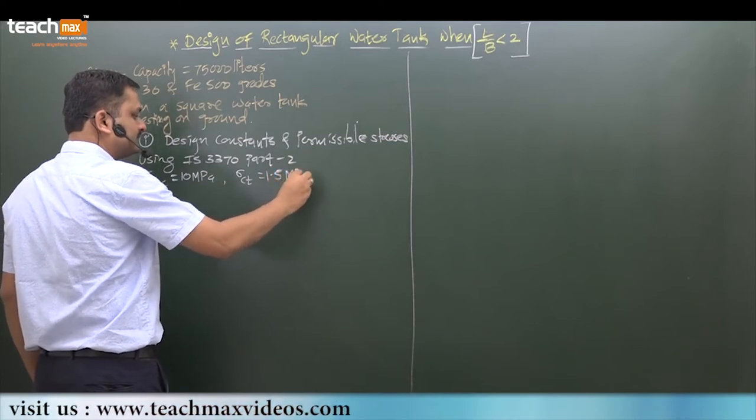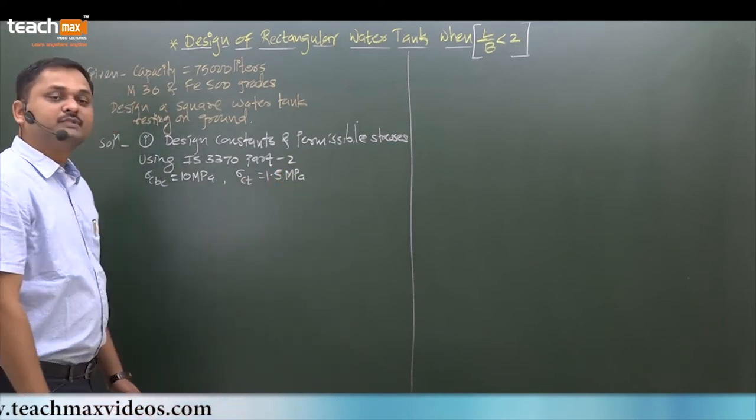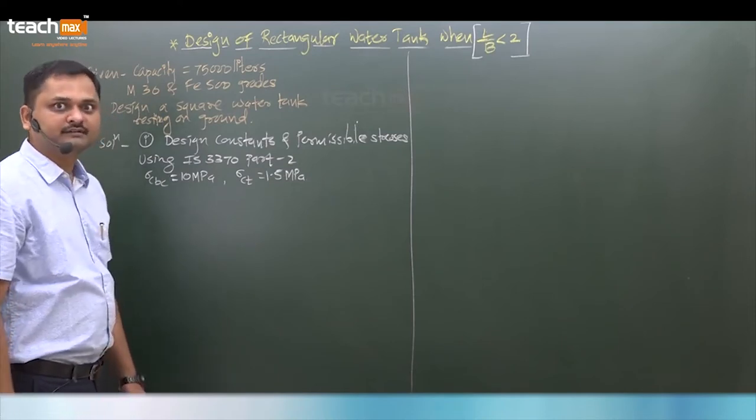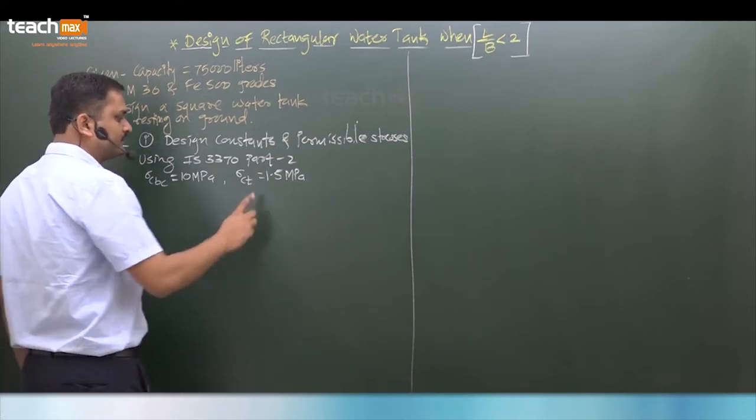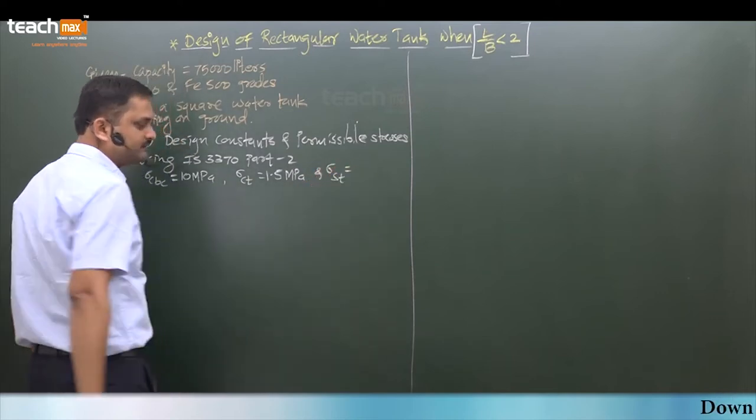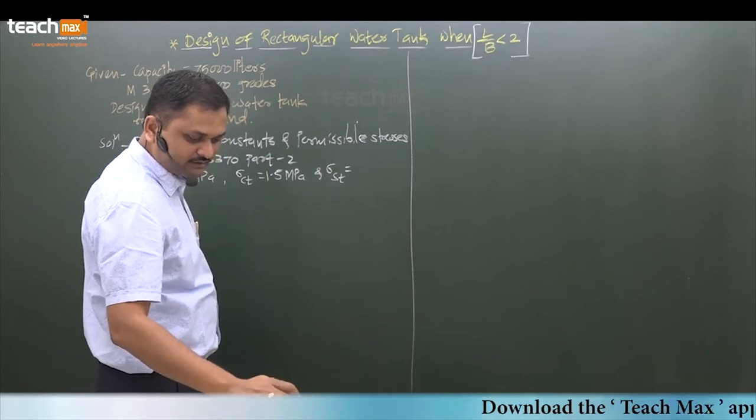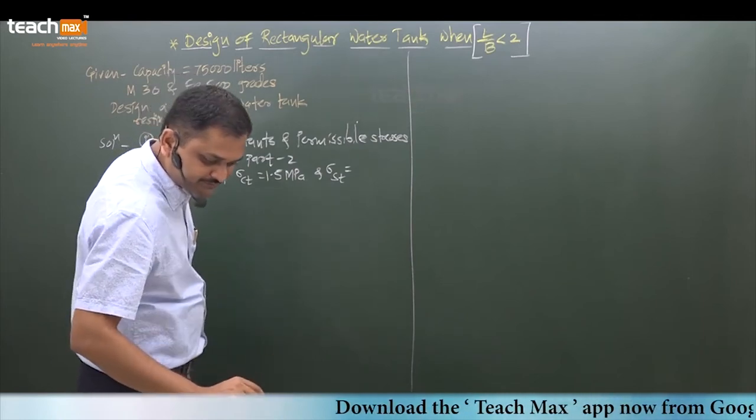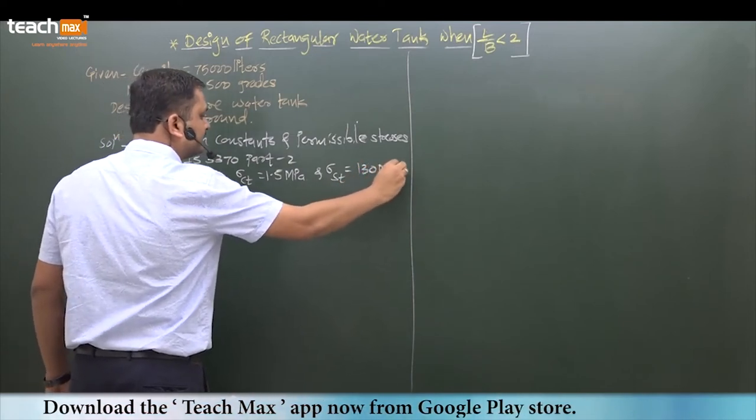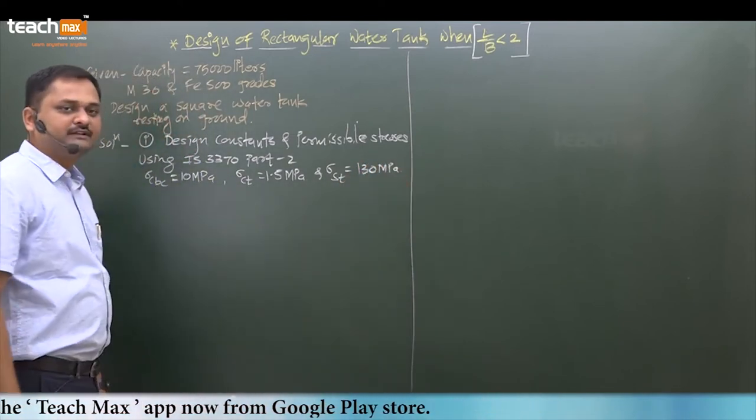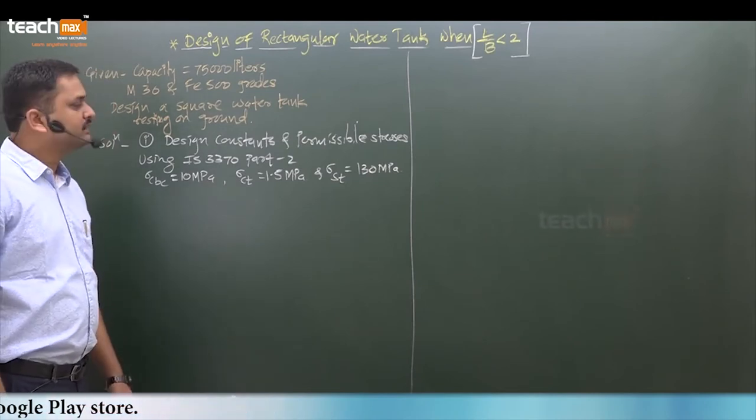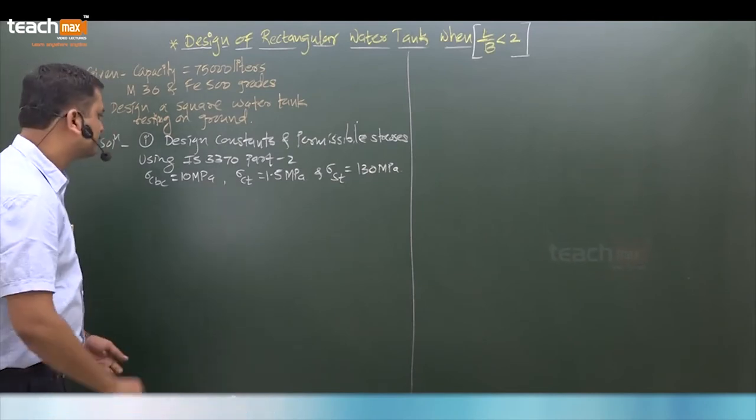What is Sigma CT? It means the permissible direct tensile stress in concrete. And last, Sigma ST - the third value that we get from table number 4. For all HYSD bars, this value is 130 MPa, meaning for Fe415 or Fe500 we will use this 130 MPa.